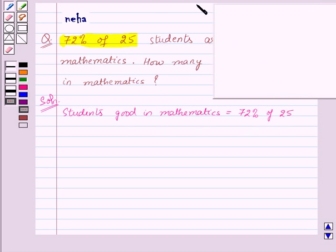Now we know that 1% equals 1/100 in fraction. So 72% equals 72/100. This is equal to 72/100 times 25.